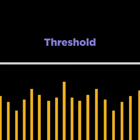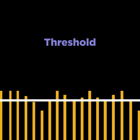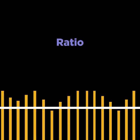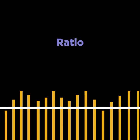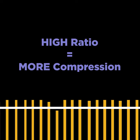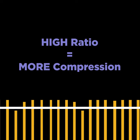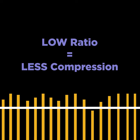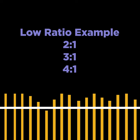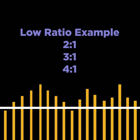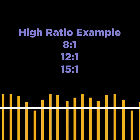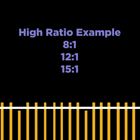Setting the threshold tells our compressor where to start compressing. Adjusting the ratio tells our compressor how much to compress. A high ratio compresses more and a low ratio compresses less. A low ratio allows more of the sound to pass the threshold, while a high ratio allows less of the sound to pass the threshold.